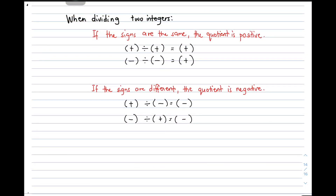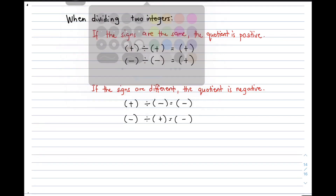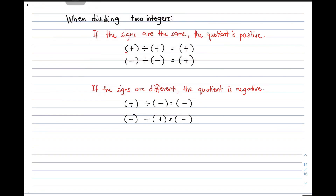When dividing two integers, here's the rule. If the signs are different, the quotient is negative. When you have a positive number divided by a positive integer, automatic, the quotient is positive. If the integer is negative and it will be divided by another negative number or integer, automatically the quotient should be positive.